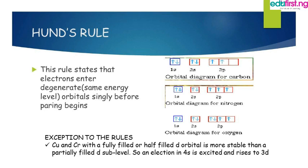The third rule is Hund's rule, which states that electrons prefer to enter degenerate orbitals singly before pairing begins. For instance, carbon with atomic number 6 has the 2p orbital with one electron in each before pairing. Nitrogen similarly has single electrons in each 2p orbital. For oxygen, the 2p orbital has two electrons in the first and one in each of the others, so electrons enter degenerate orbitals singly first before pairing begins.